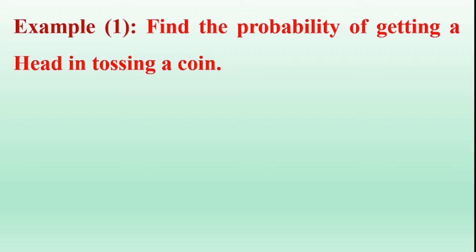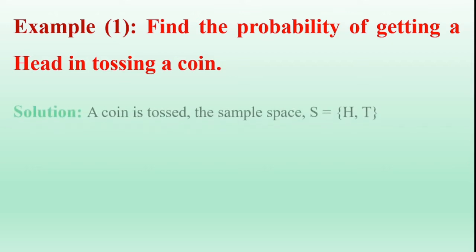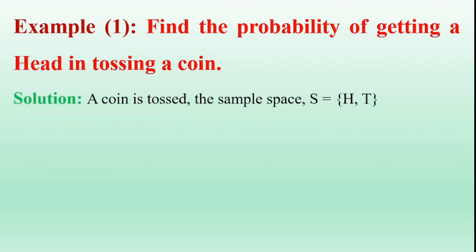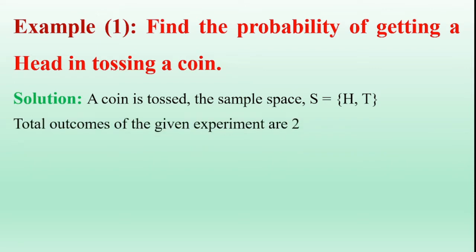Find the probability of getting a head in tossing a coin. If a coin is tossed, totally there are two possible outcomes: head and tail. The total number of possible outcomes are two.